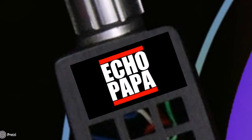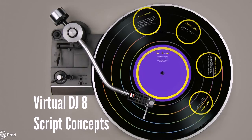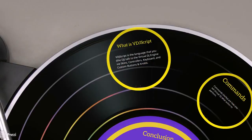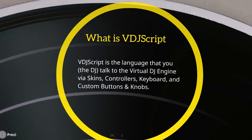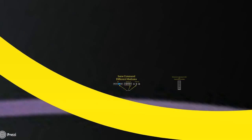Welcome everybody, this is Echo Papa, and today we're going to be talking about Virtual DJ 8 script concepts. We're not actually going to get into any real scripting — we're just going to talk about the ideas behind scripts, what makes it so easy to use, and some of the things that you can do with it. Script, or VDJ script, is the language that you use to talk to the Virtual DJ engine.